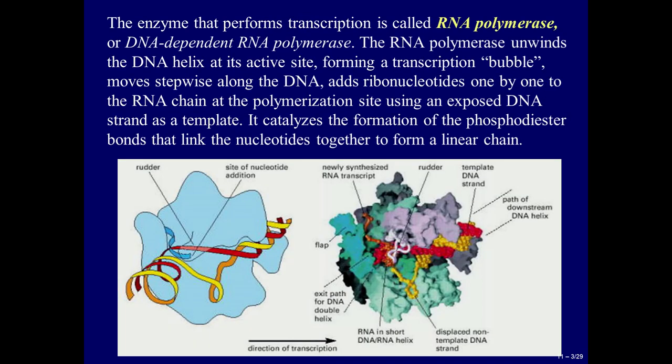The enzyme that performs transcription is called RNA polymerase or DNA-dependent RNA polymerase. The RNA polymerase unwinds the DNA helix at its active site, forming a transcription bubble, moves stepwise along the DNA, adds ribonucleotides one by one to the RNA chain at the polymerization site using an exposed DNA strand as a template. It catalyzes the formation of the phosphodiester bonds that link the nucleotides together to form a linear chain.